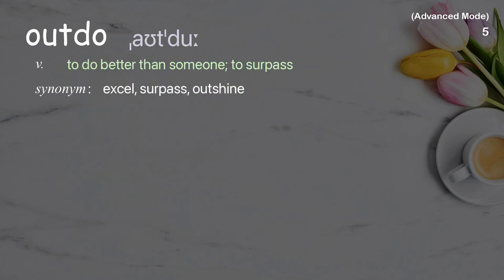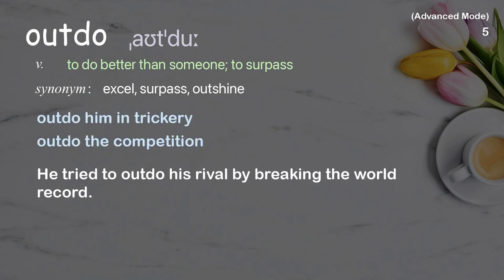Outdo: To do better than someone; to surpass. Examples: outdo him in trickery, outdo the competition. He tried to outdo his rival by breaking the world record.